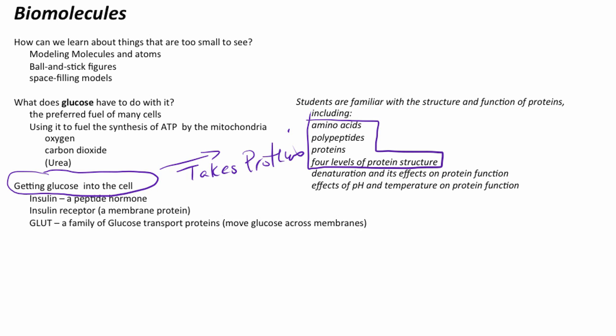Before we can take our story further about how we get glucose into the cell, we have to pause for just a moment and talk about protein structure. Because many of the players—insulin, a glucose transport protein, and the insulin receptor—all of those things are proteins. So let's look at some protein structure.